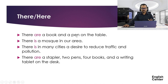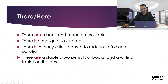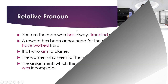After 'here' and 'there,' the verb can be singular or plural depending on what follows. There are a book and a pen on the table — two things, plural. There is a mosque in our area — one thing, singular. There is in many cities a desire to reduce traffic and population — head word is 'desire,' singular. There are a stapler, two pens, four books, and a writing tablet on the desktop — many things, plural.